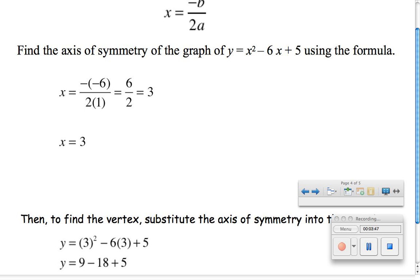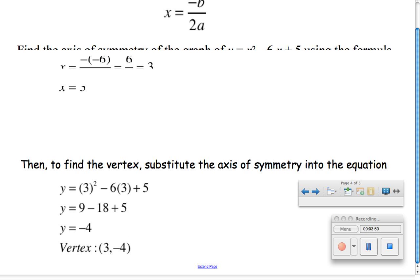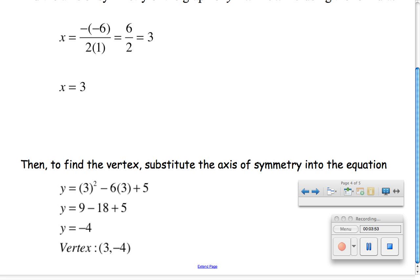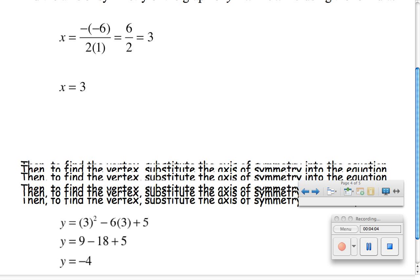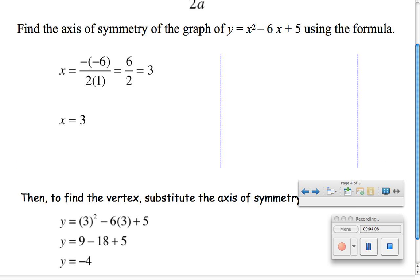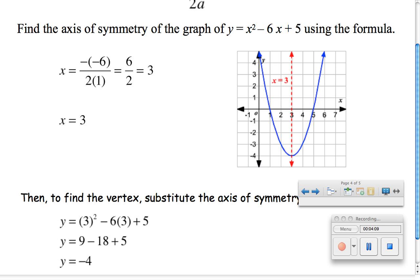Then to get the rest of the vertex, all I'm missing is the y value, because if you remember from before, the axis of symmetry always passes through the vertex. So to calculate that, all I do is substitute the axis of symmetry into the equation. So you can see I took 3 for x and put it everywhere I saw x in the original equation, and I get y equals negative 4, meaning that my vertex is at 3, negative 4.